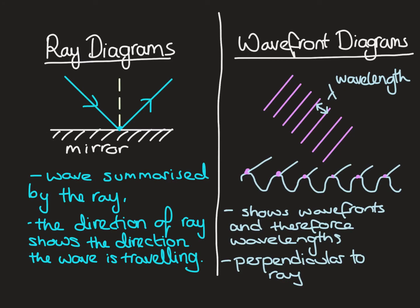Here we have our two types of diagrams: ray diagrams and wavefront diagrams. In a ray diagram — the ones we learned to draw first — we are summarising the path of waves with one single ray. We put an arrow on it to show the direction the waves are travelling. We never have any gaps in our ray diagram, we always have arrows, and we always draw them with a straight line.